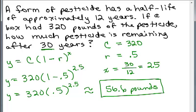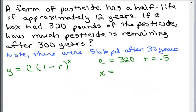So let's do a similar problem. Let's go ahead and do this one. So almost the same problem except we're going to ask how much pesticide is remaining after 300 years instead of 30 years. So just remember that after 30 years, we got 56.6 pounds. Here's the formula again. Our C is still 320 pounds. Our rate of decay is still 50%, 0.5. And how many time periods have gone by? You take the number of years, 300 years total, and each time period is 12 years. So you've got to divide by 12. This actually comes up to a whole number, 25.